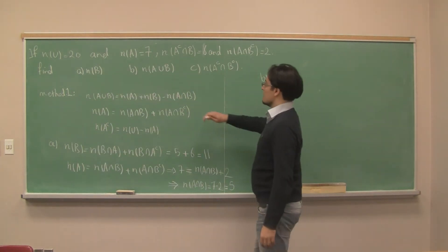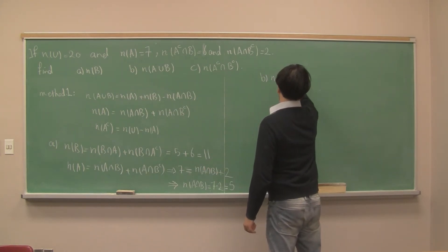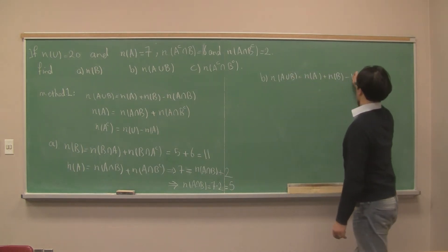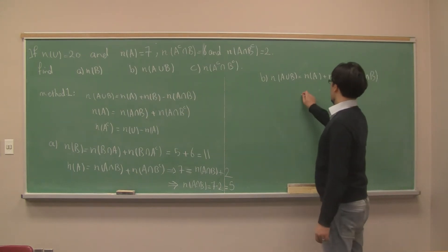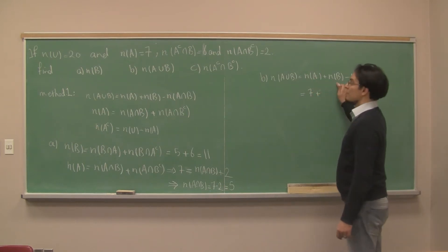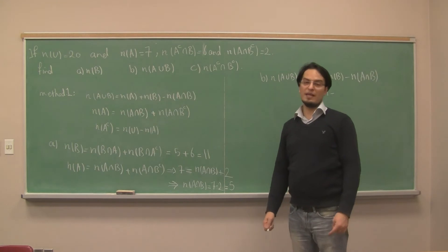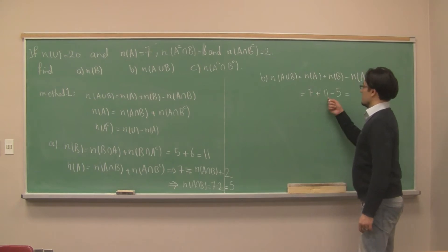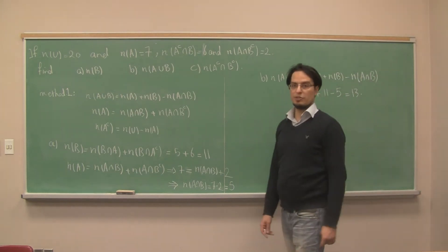For part B, the number of elements in the union, we use the inclusion-exclusion principle: N of A union B equals N of A plus N of B minus N of A intersect B, which is 7 plus 11 minus 5, giving 13. The union has 13 elements.